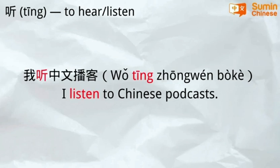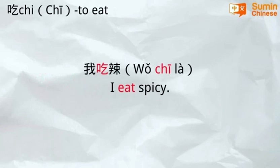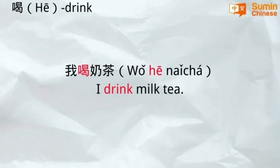Use the verb 听 (to listen): 我听中文播客 — I listen to Chinese podcasts. Use the verb 吃 (to eat): 我吃辣 — I eat spicy food. Use the verb 喝 (to drink): 我喝奶茶 — I drink milk tea.